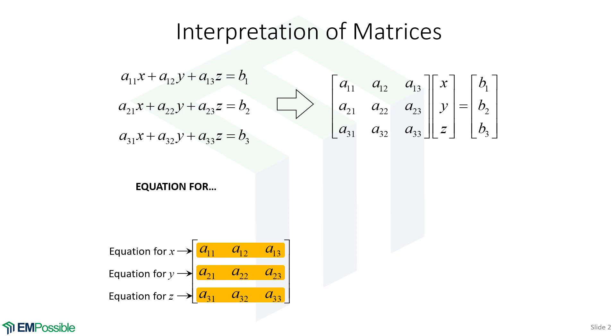When we interpret the rows of a matrix, we're going to think of the first row as the equation for X, the second row the equation for Y, and the third row the equation for Z.